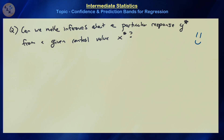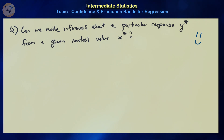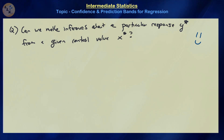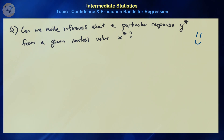The next question: instead of making inferences about the mean of the distribution, is it possible to make inferences about a particular response value y* from a given control value x*? Here we care about the actual value within the distribution at x*, not just the mean. We'll be increasing the amount of uncontrolled error, but that's the price we pay for a more specific prediction.